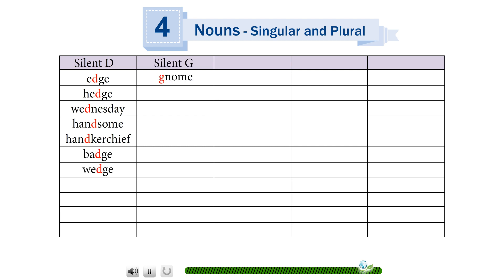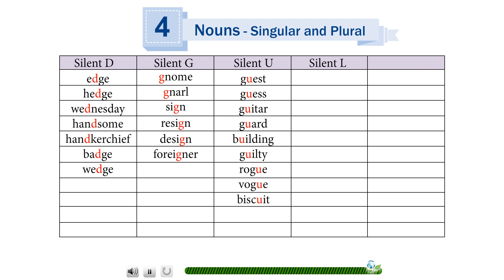Silent G: gnome, gnarl, sign, resign, design, foreigner. Silent U: guest, guess, guitar, guard, building, guilty, rogue